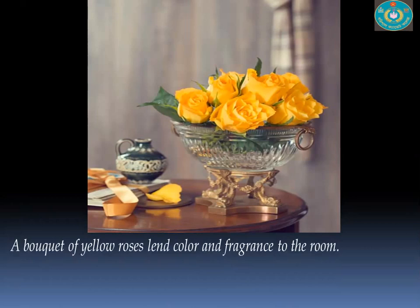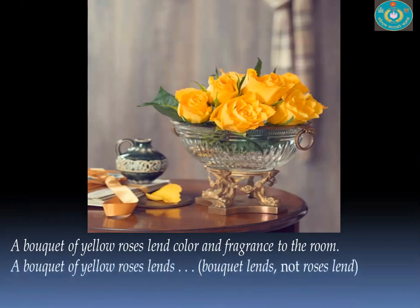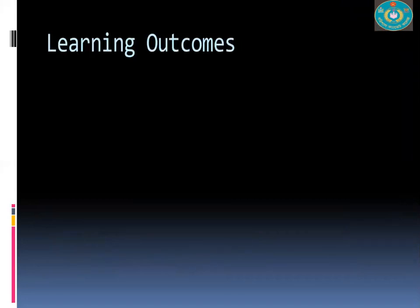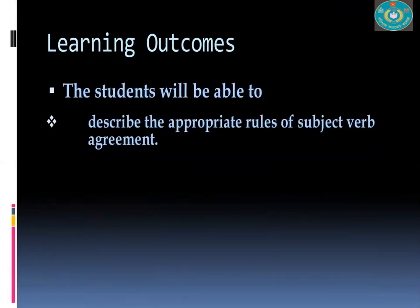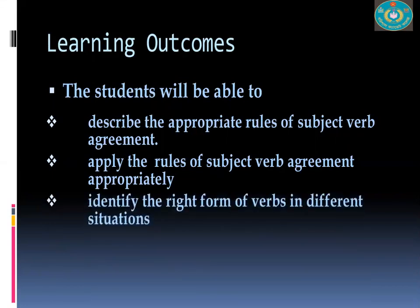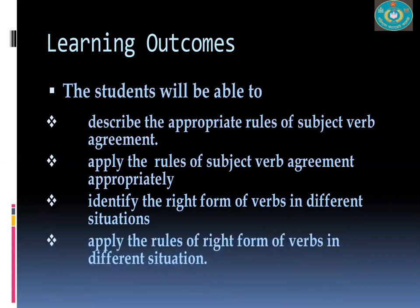Look at this sentence: 'A bouquet of theologians lent color and fragrance to the room.' Does this sentence sound correct to you? No, it is not correct. The correct one is: 'A bouquet of roses lent color and fragrance to the room.' You may have understood that today's topic is right forms of verbs — a very useful and important topic. After today's lesson, you will be able to describe and apply the rules of subject-verb agreement, identify the right form of verbs, and apply those rules in different situations.